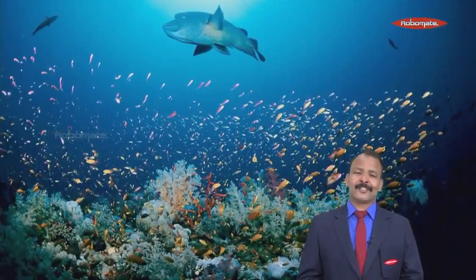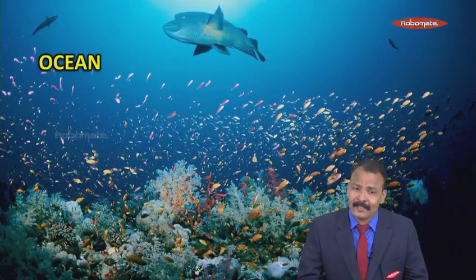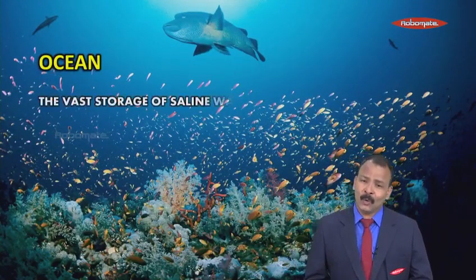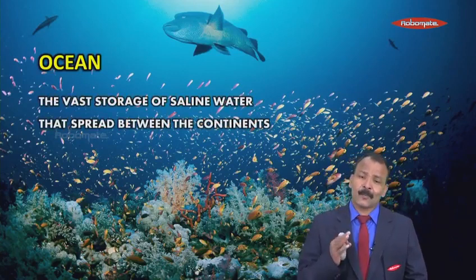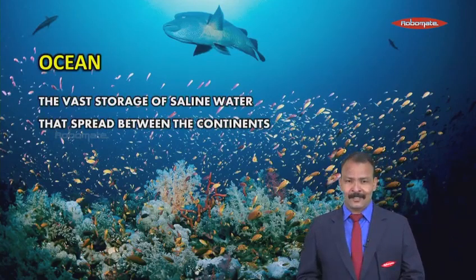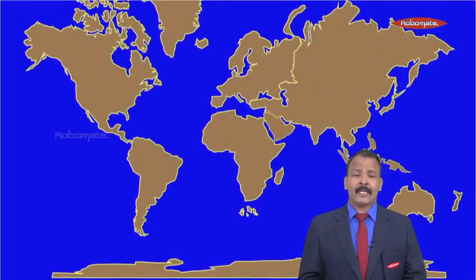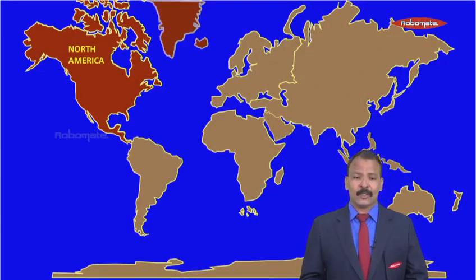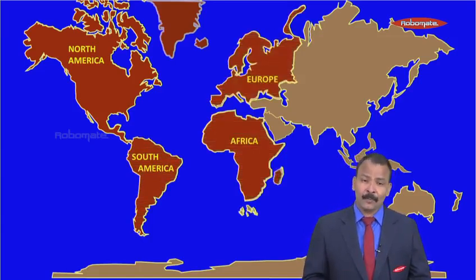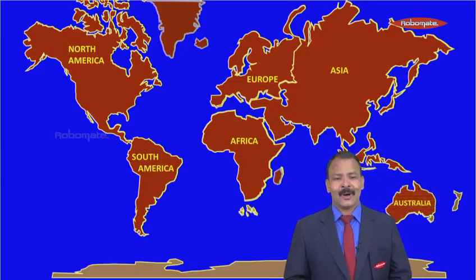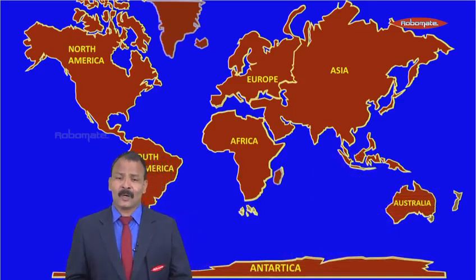First of all, the largest water body is the ocean. An ocean is a vast storage of saline water that spreads between continents. To understand this, let's see the world map. The continents are: North America, South America, Africa, Europe, Asia, Australia, and Antarctica.